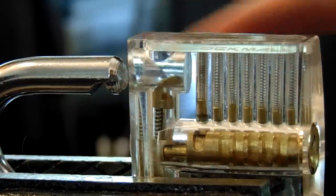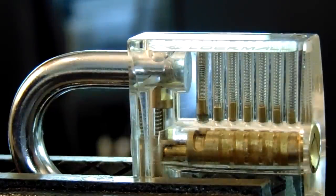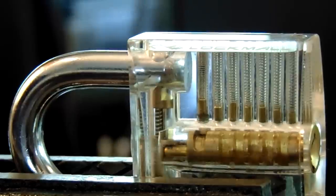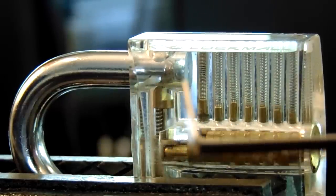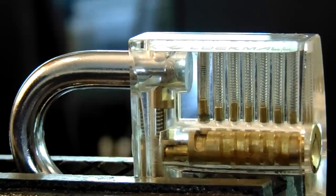Now when we're going to do single pin picking, we are going to need to use a tension wrench. This is for the bottom of the keyway. It's a popular choice when people are first learning. And a hook.